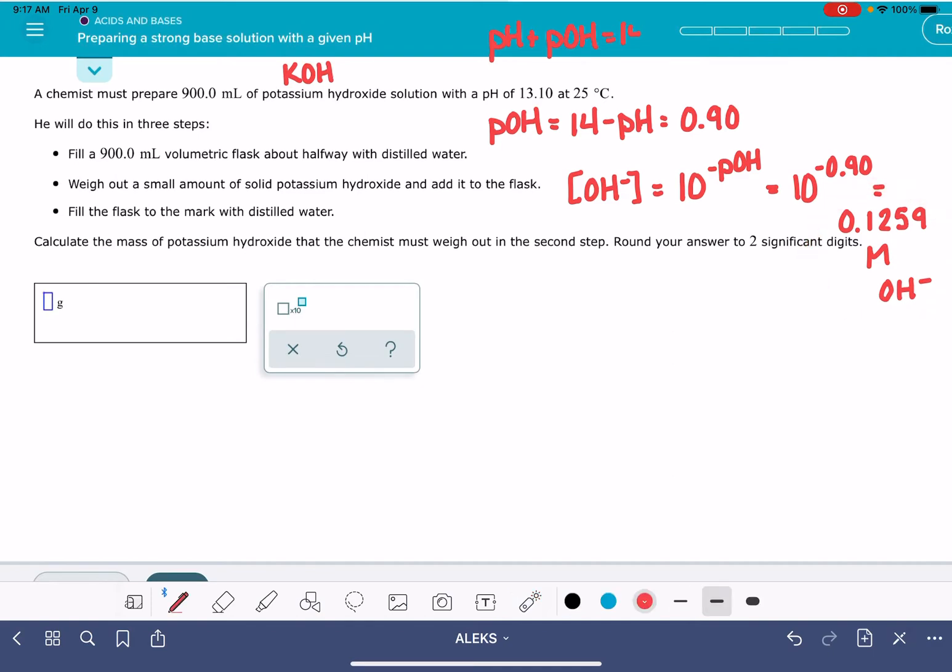So once we've got to this point, the problem kind of changes. Now we can think about the problem as if it's asking us, how much potassium hydroxide, KOH, do I need in order to make a solution that is 0.1259 molar hydroxide ion? 0.1259 molar means that we have 0.1259 moles of hydroxide ion for every liter of solution.